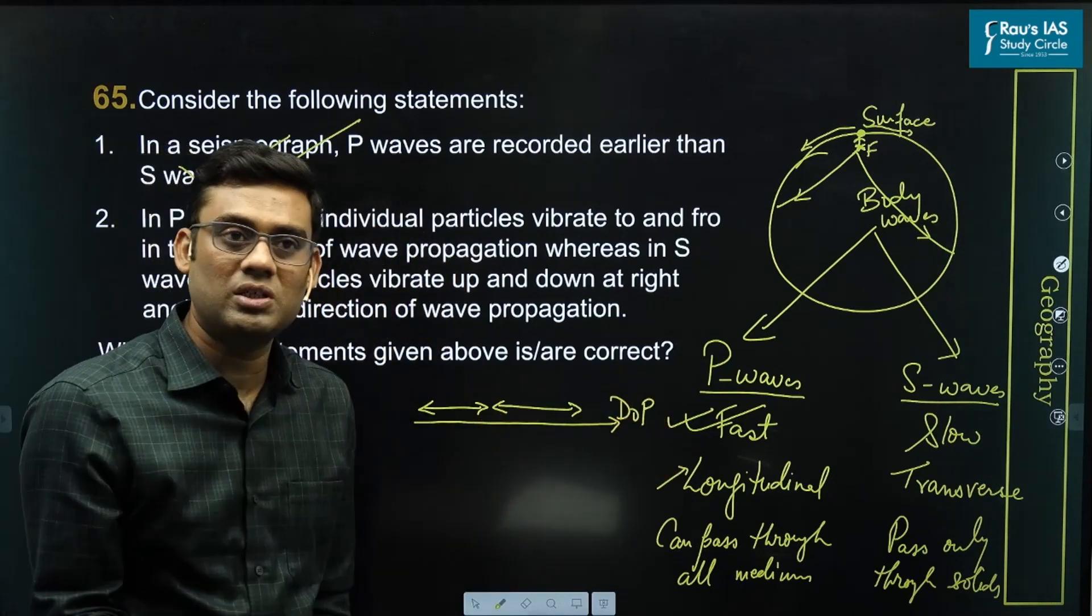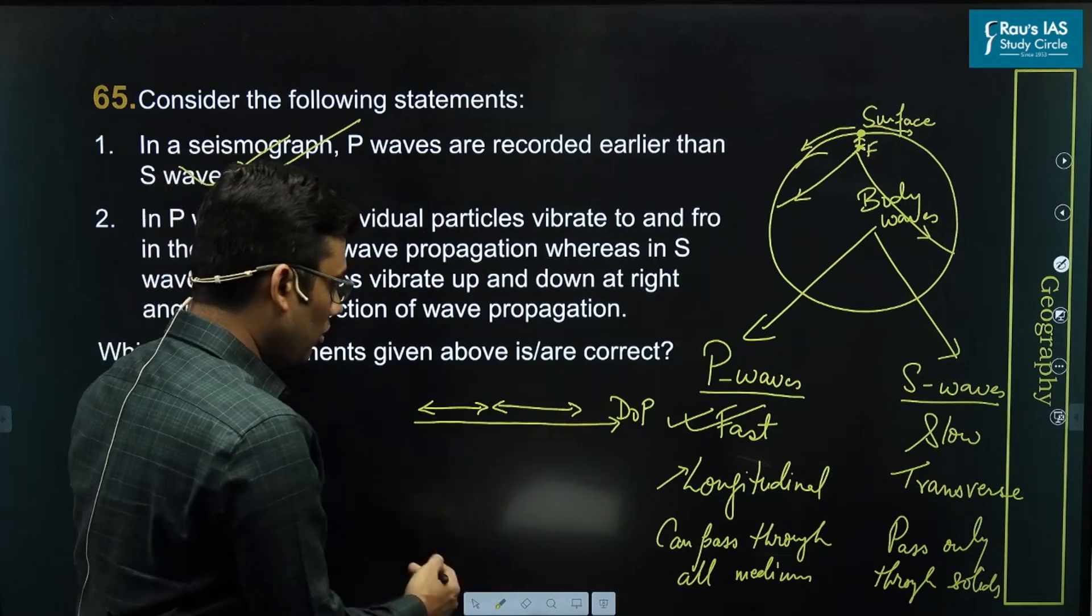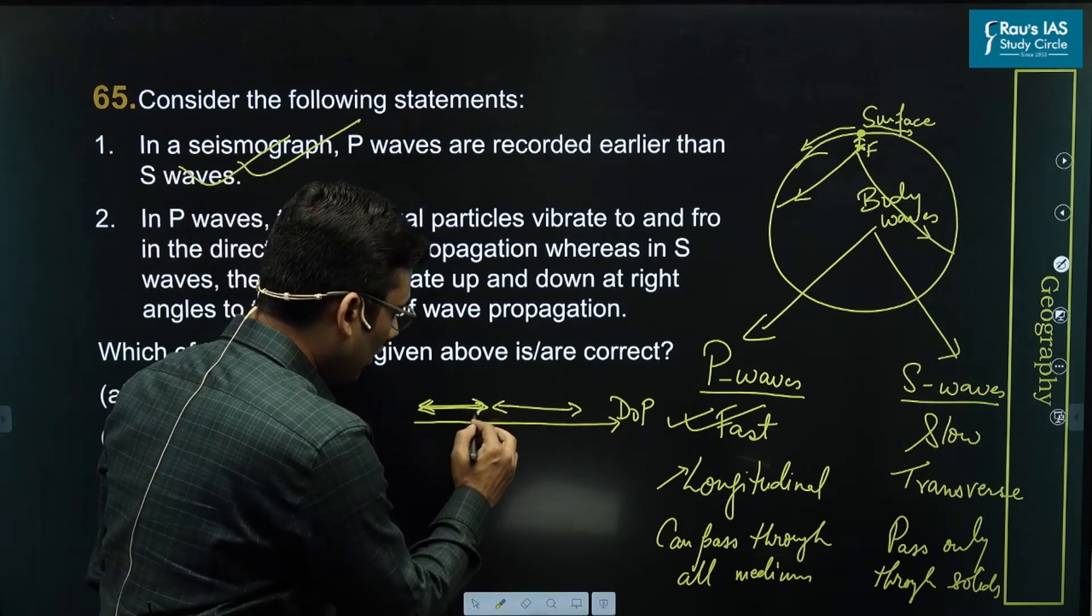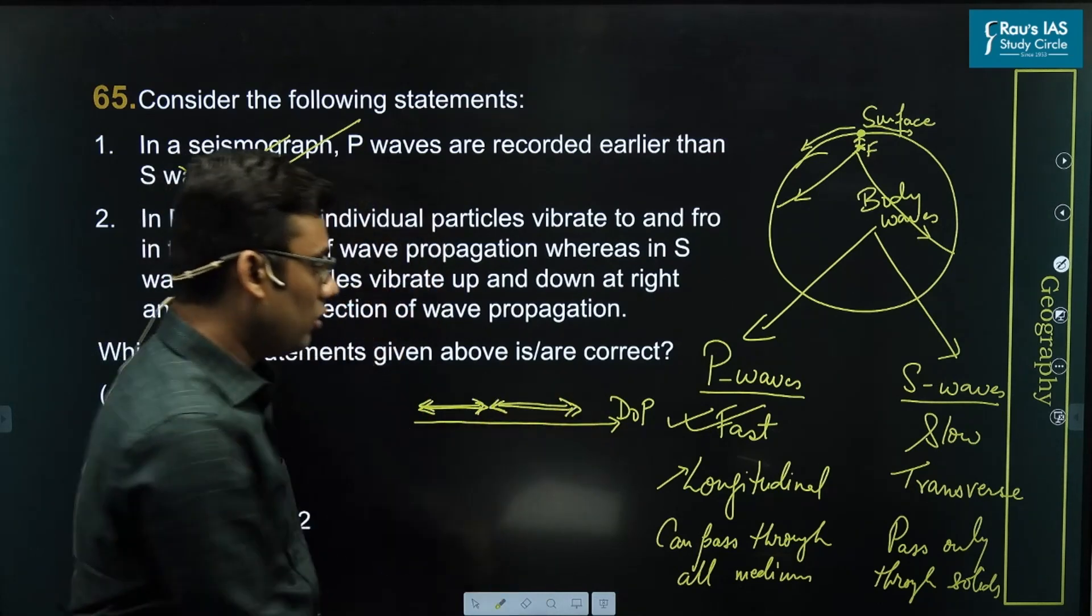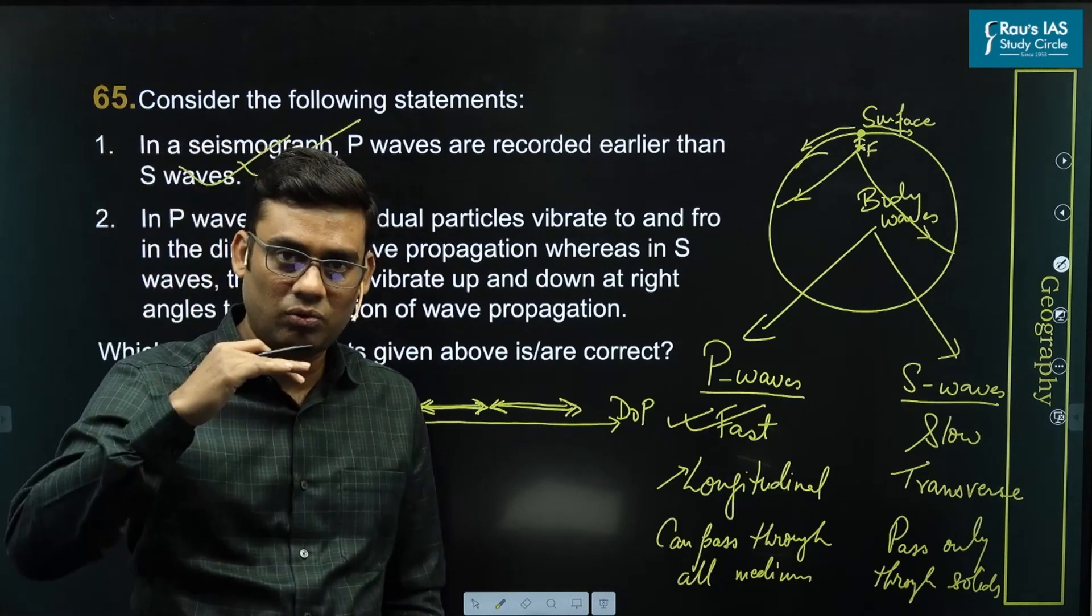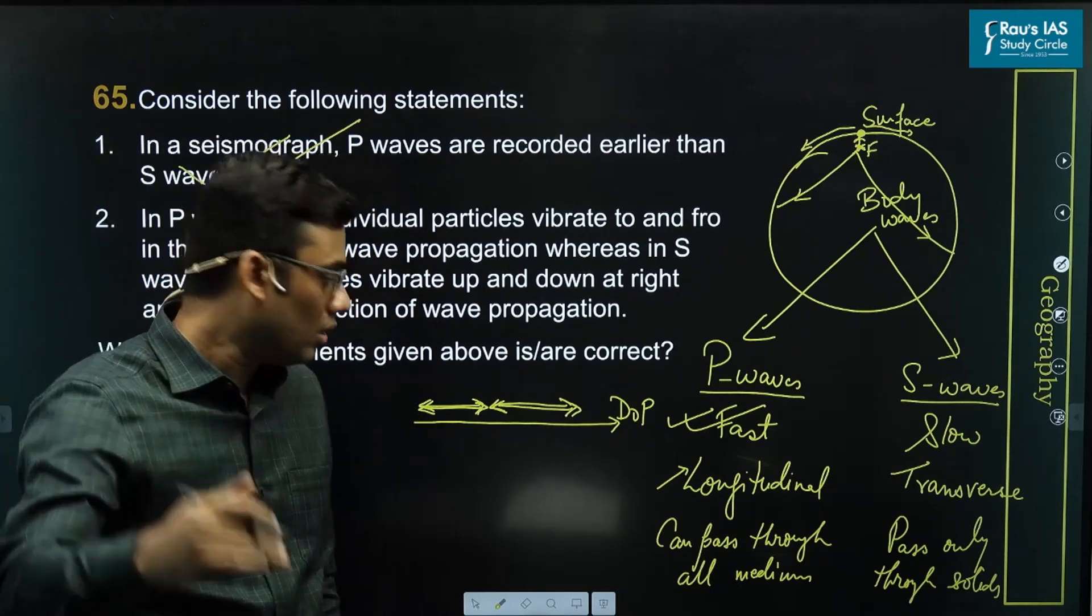One good example can be sound waves. Sound waves are longitudinal waves. And in sound waves, the particle vibrates parallel to the direction of propagation. This is what we mean by to and fro.